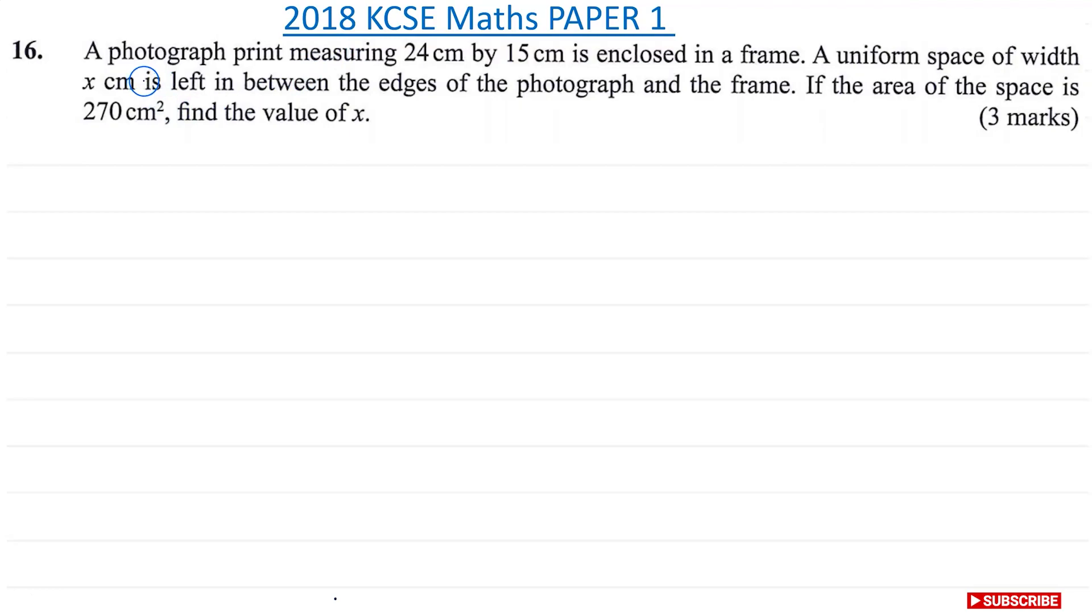So we are told a photograph print measuring 24cm by 15cm is enclosed in a frame. A uniform space of width x cm is left in between the edges of the photograph and the frame. If the area of the space is 270cm², find the value of x.